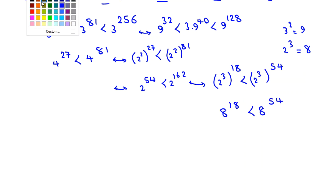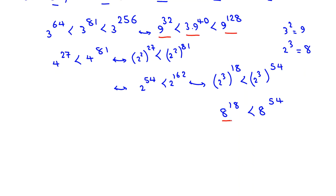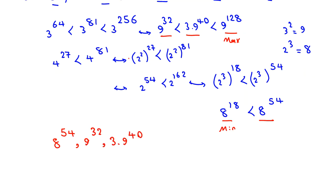If we now check all our numbers — 8 to the 18, 8 to the 54, 9 to the 32, 3 times 9 to the 40, and 9 to the 128 — we can easily see that 8 to the 18 is the minimum, because it is less than all the others: the base 8 is less than base 9, and the power 18 is also less. The maximum is 9 to the 128. We still need to check the order of 8 to the 54, 9 to the 32, and 3 times 9 to the 40.